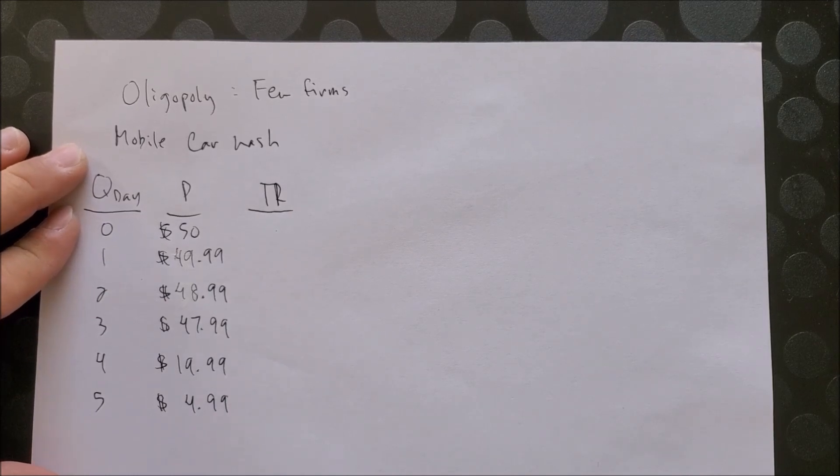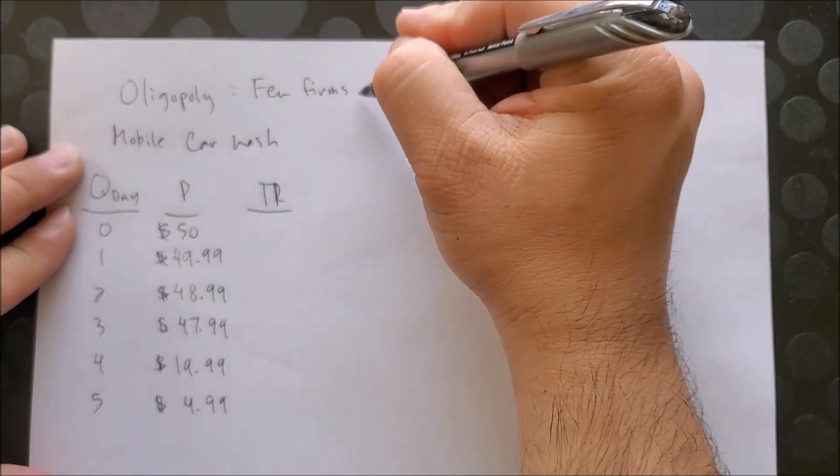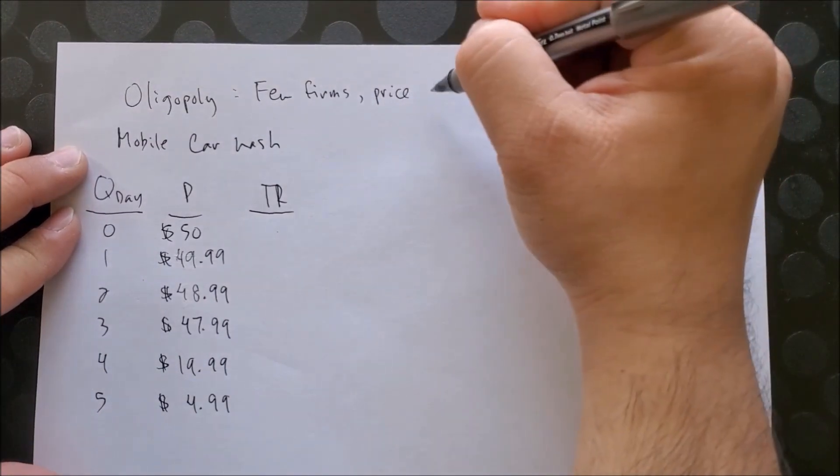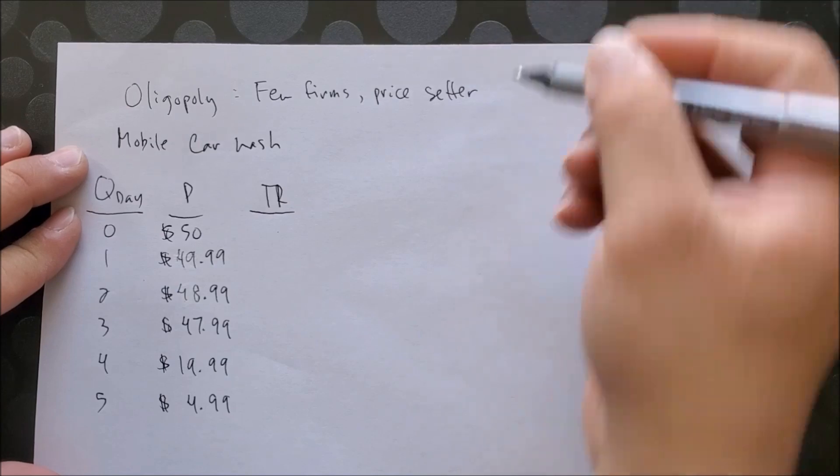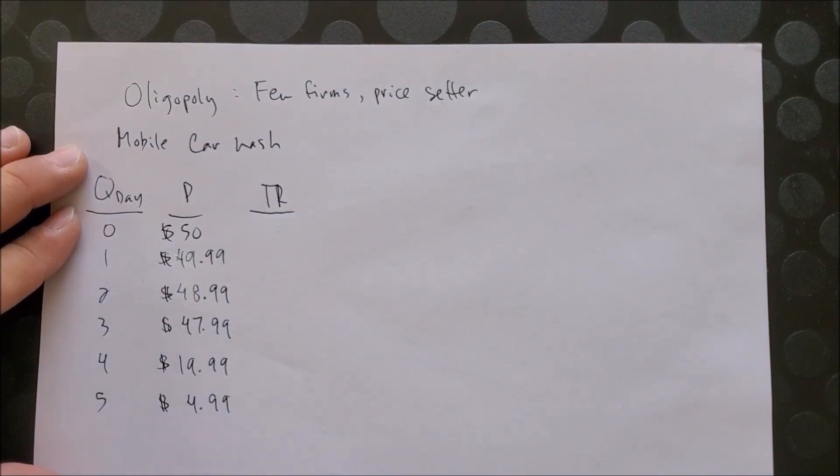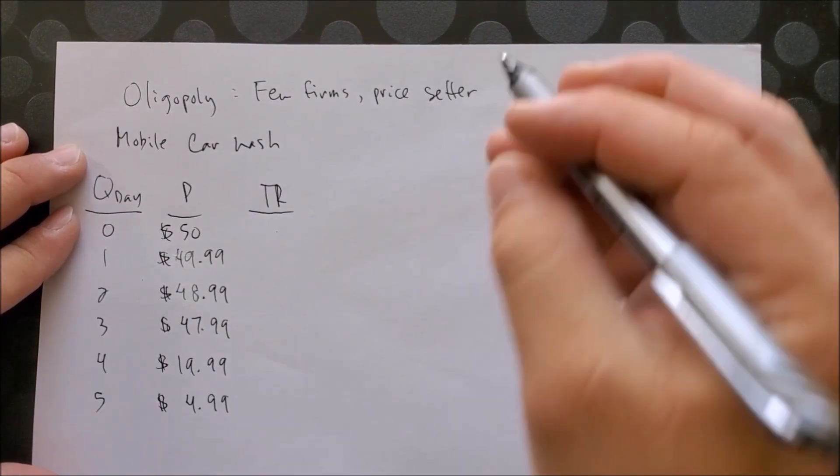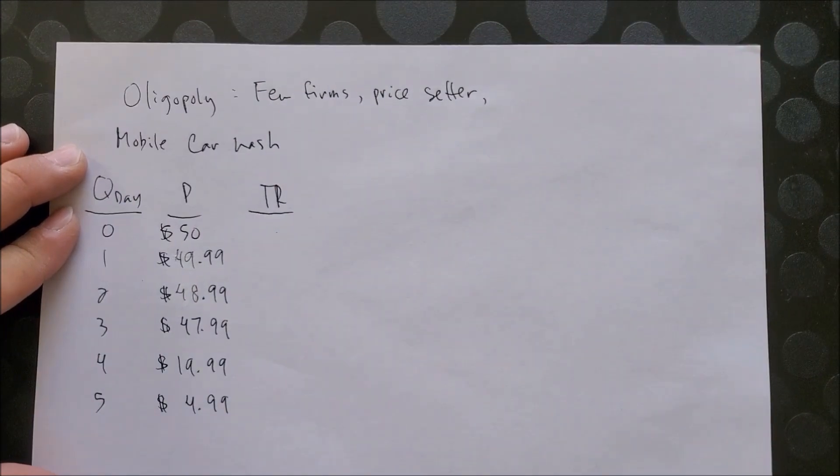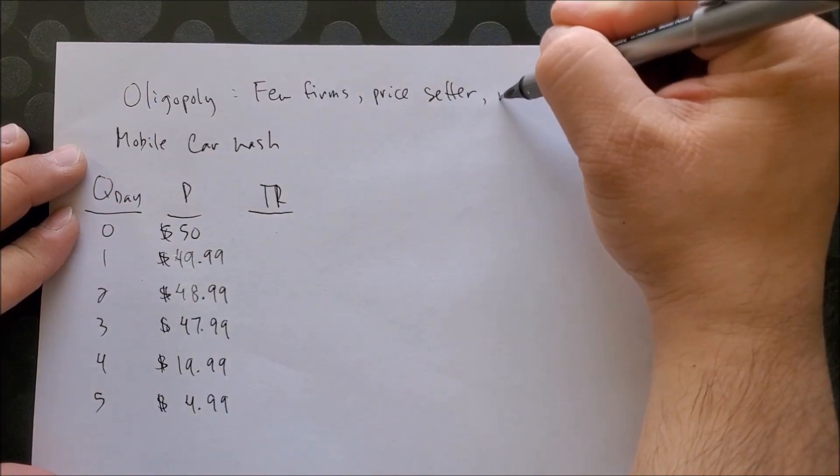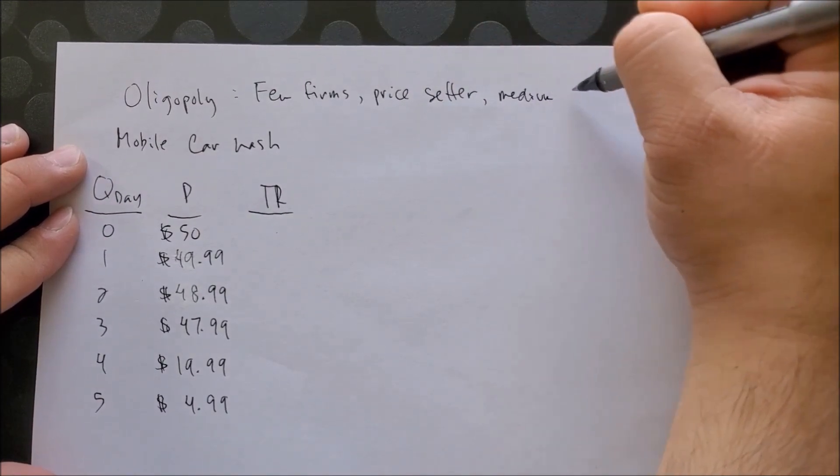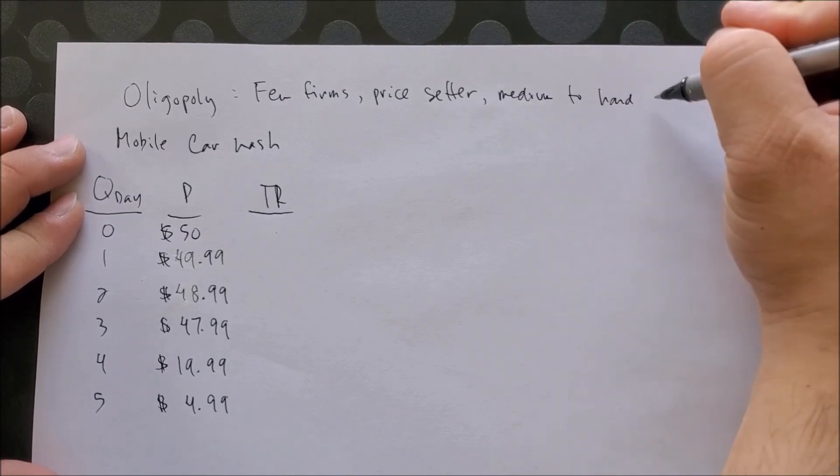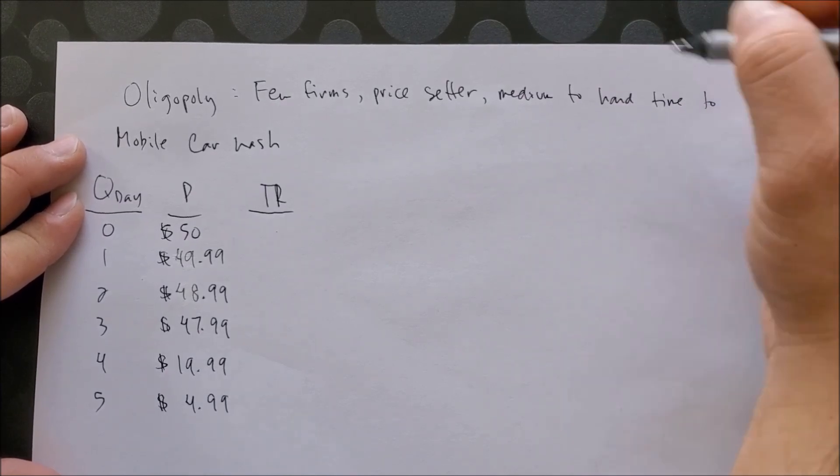Besides having a few firms, the other assumptions are that the oligopolist is a price setter, which means they can actually make the price based upon the demand curve. It is pretty much challenging to enter or exit the market, like a monopolist, because very few large companies control it. So we could say it's medium to hard to enter the market.